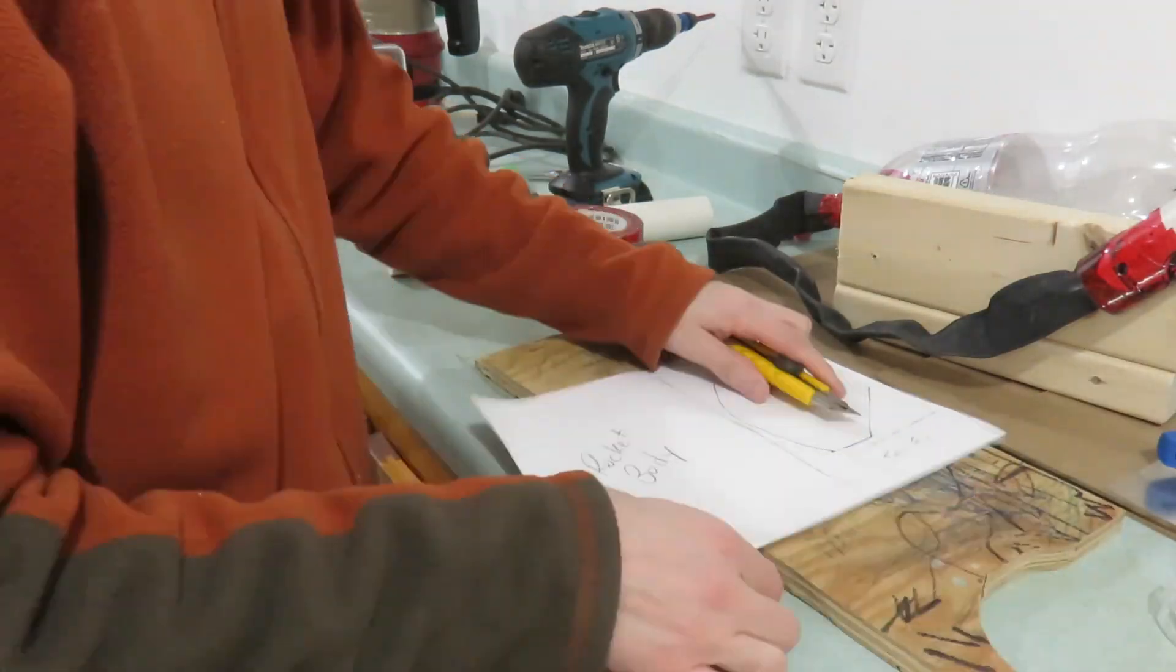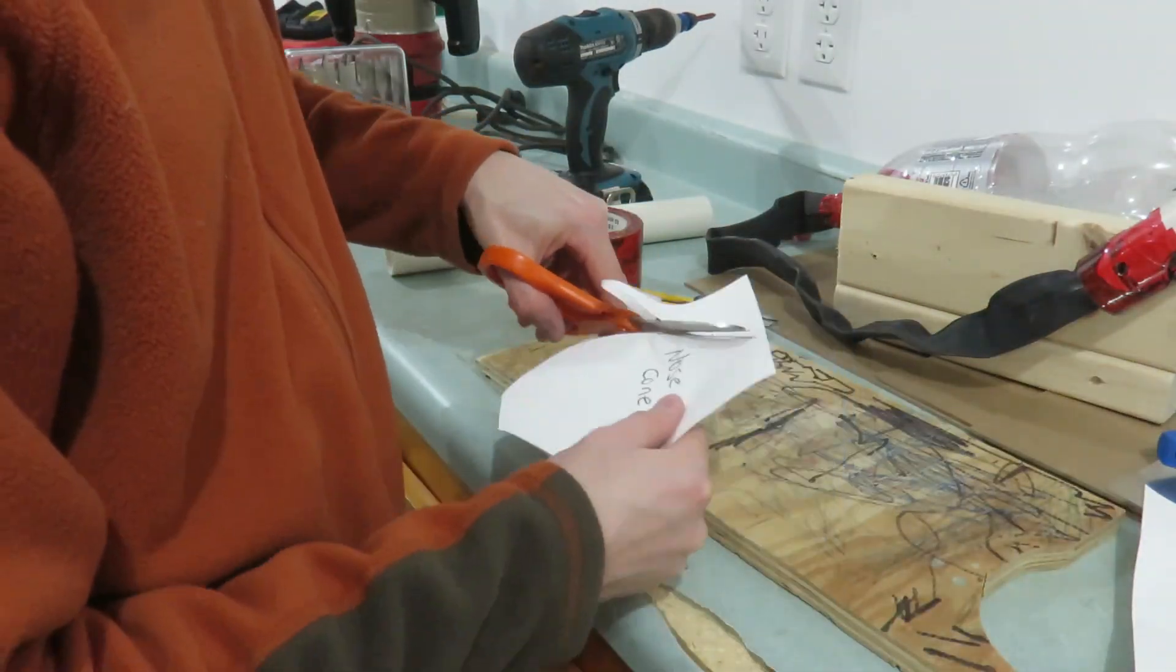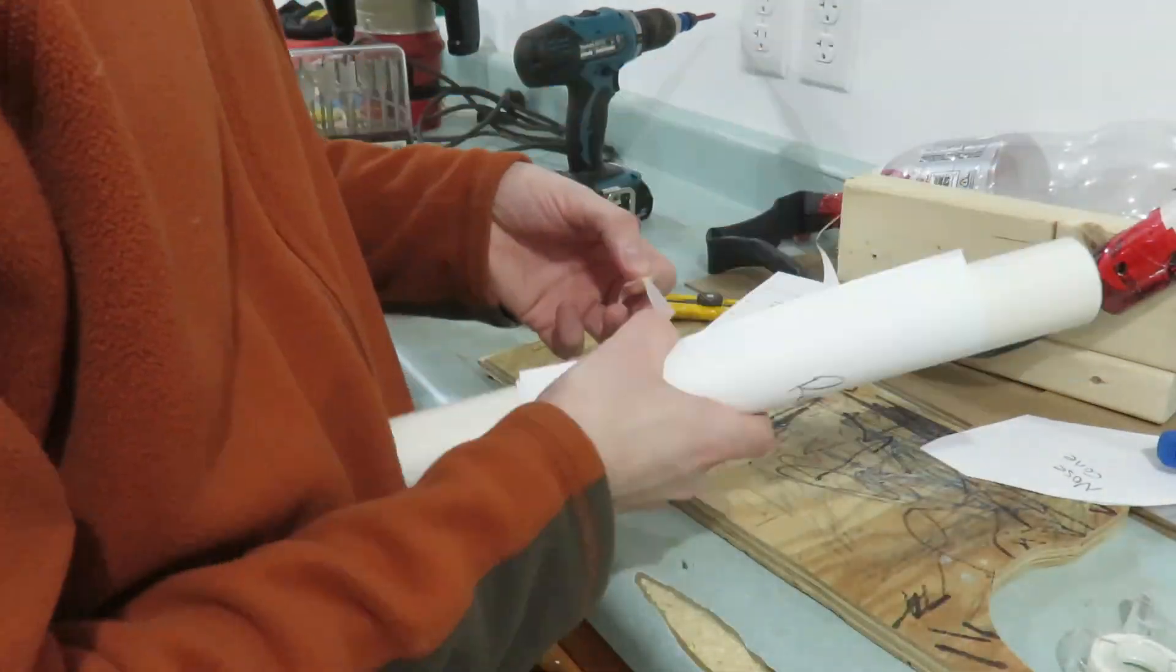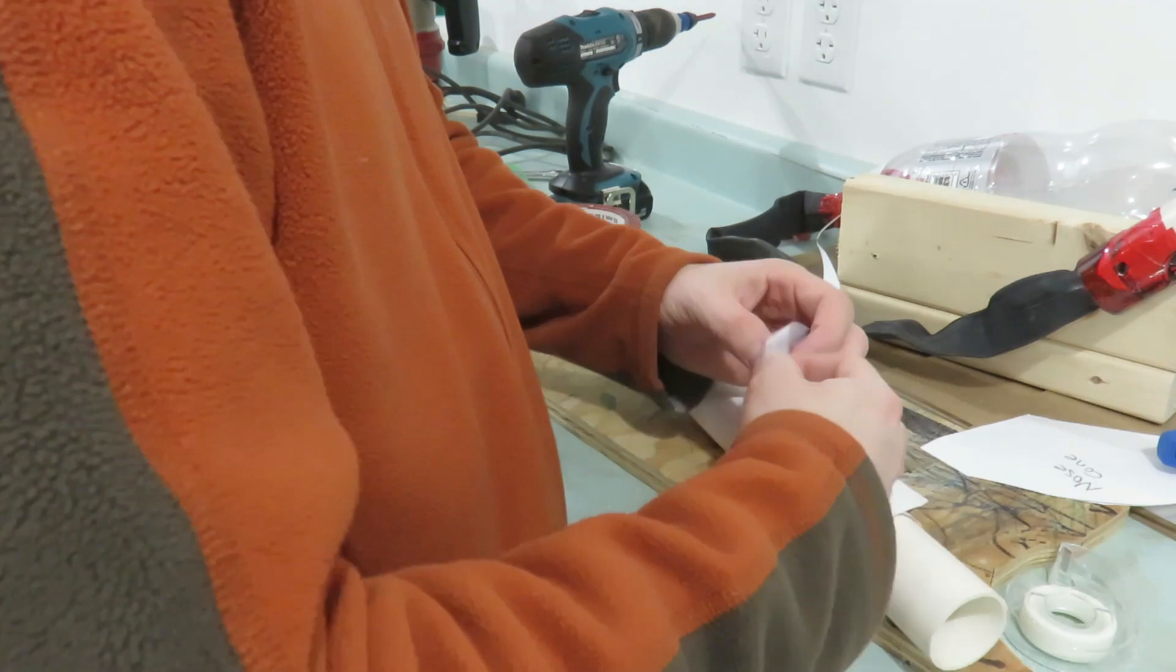With the rocket launcher completed let's build a paper rocket to launch. I use a rough template. I will put a link to it in the description below.